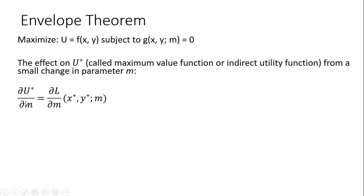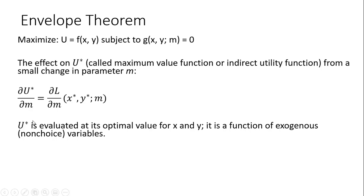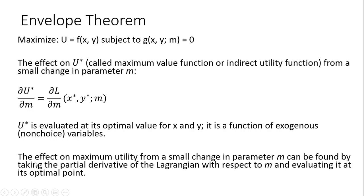The envelope theorem tells us that this partial derivative on the left-hand side will simply equal the partial derivative of the Lagrangian with respect to parameter m, evaluated at its optimal values — x star and y star. So u star, the maximum value function or indirect utility function, is evaluated at its optimal values for x and y. It is a function of exogenous or non-choice variables, like prices of goods and income. So the effect on maximum utility from a small change in parameter m can be found by taking the partial derivative of the Lagrangian with respect to m and evaluating it at its optimal point. That's the idea of the envelope theorem.